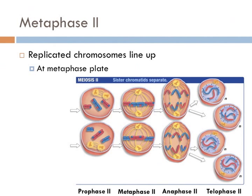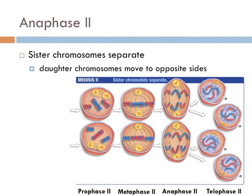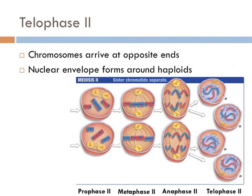In metaphase II, the replicated, recombined chromosomes line up at the metaphase plate of each daughter cell. In anaphase II, the sister chromatids separate and begin to move towards opposite sides of the cell. Then finally, in telophase II, the chromosomes arrive at opposite ends of the cell, the nuclear envelope reappears around the haploid chromosomes, and the cytosol splits, forming four haploid daughter cells from the two haploid daughter cells.